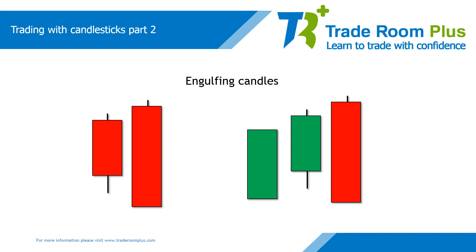An engulfing candle is one which is bigger than the candle which preceded it — it engulfs it. It is often used by reversal traders as an indication that a trend will reverse. The engulfing candles we favour are where the body of the engulfing candle at least engulfs the body of the previous candle. It does not have to engulf the whole of the previous candle, including the wicks.